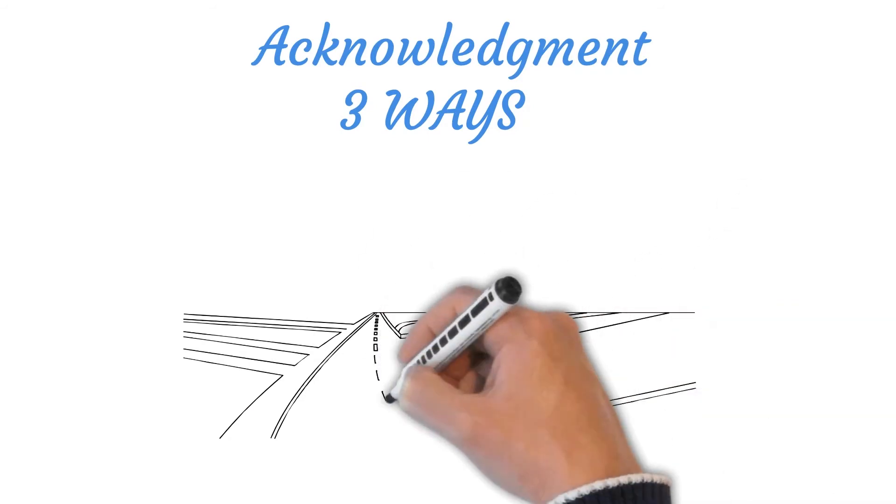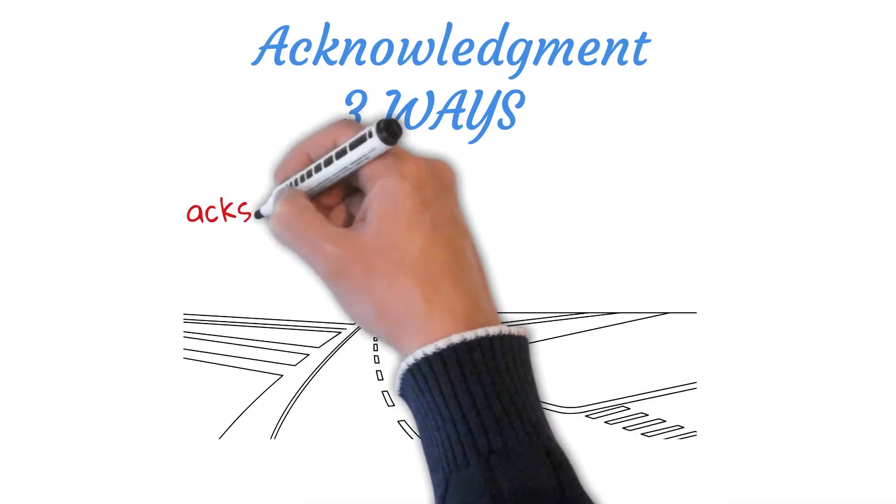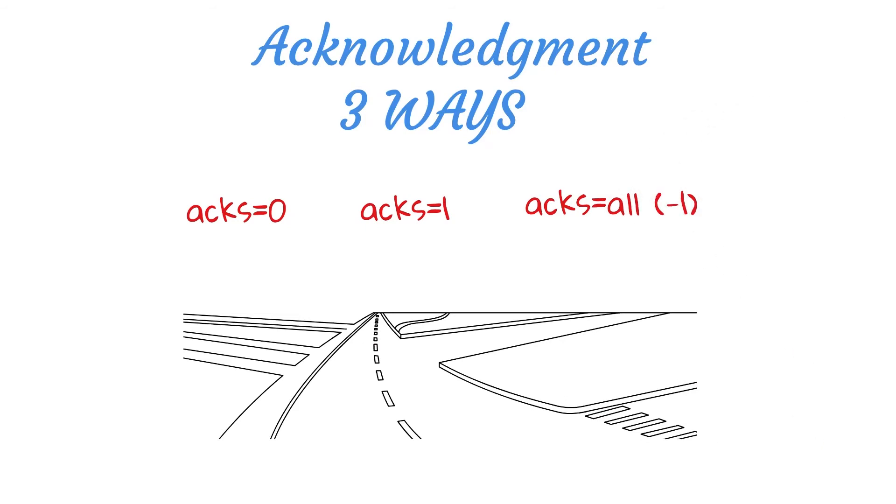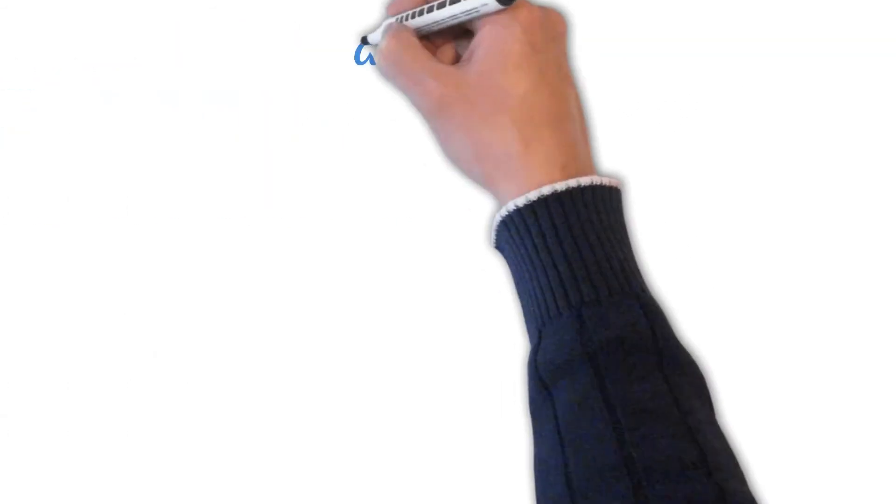Now let's talk about acknowledgement. There are three ways how to set them in the property file. The first one is zero, second is one, and all or sometimes minus one.